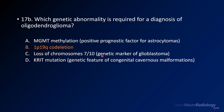If patients have loss of chromosome 7 and 10 and look like lower-grade astrocytomas, they'll be upgraded to GBM based on those genetic features. KRIT mutations are associated with cavernous malformations — formerly called CCM — so that mutation leads to multiple familial cavernous malformations. These are a few mutations you might see on a neuroradiology exam.